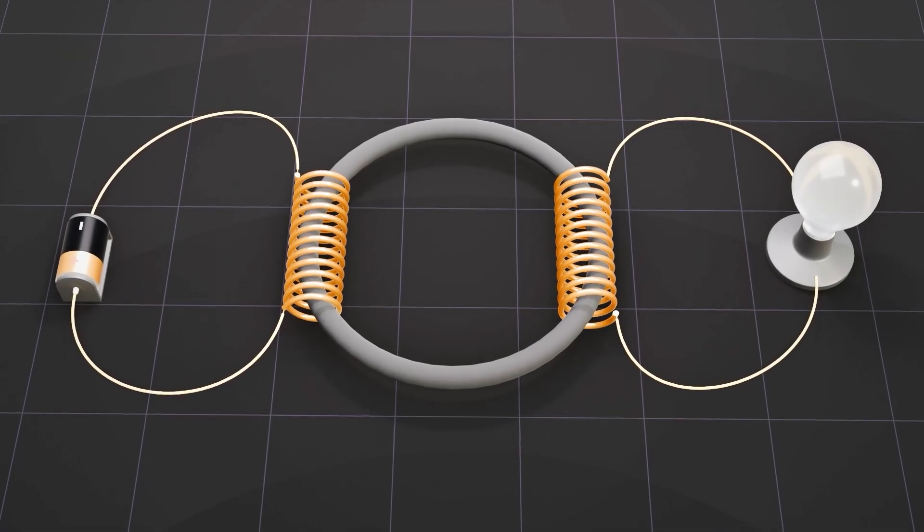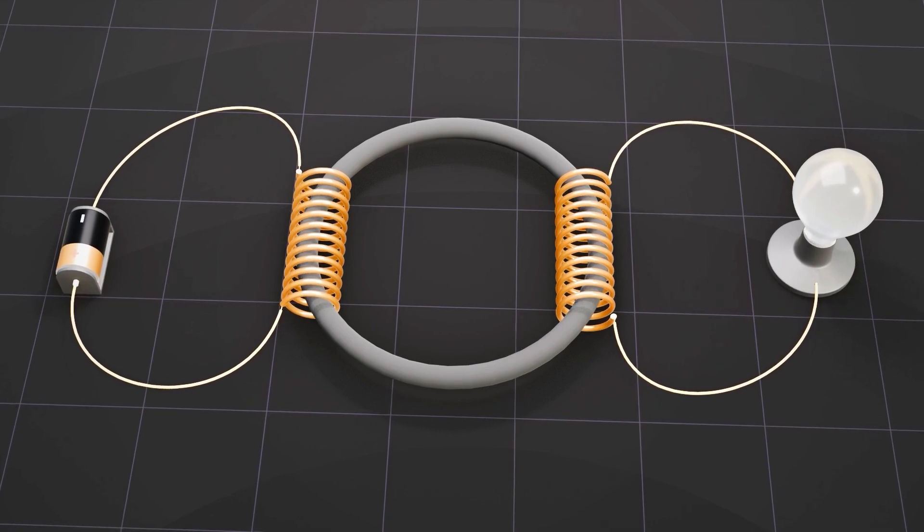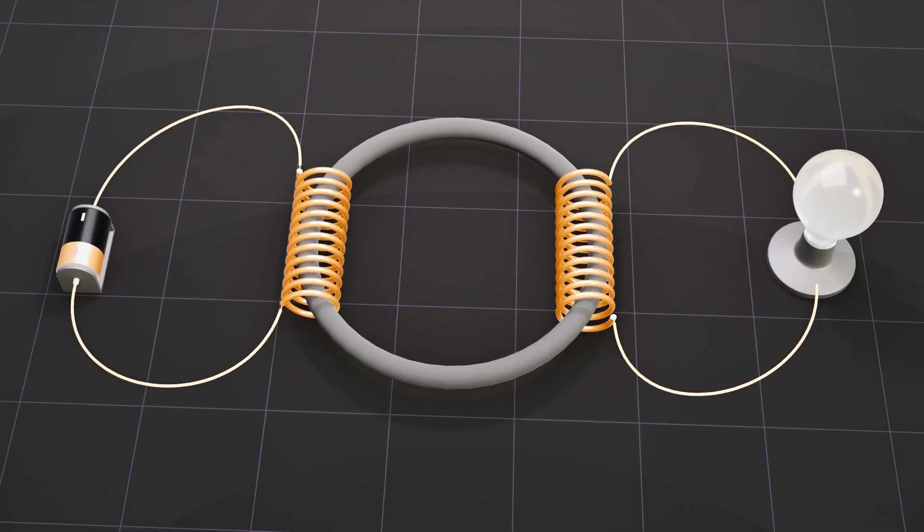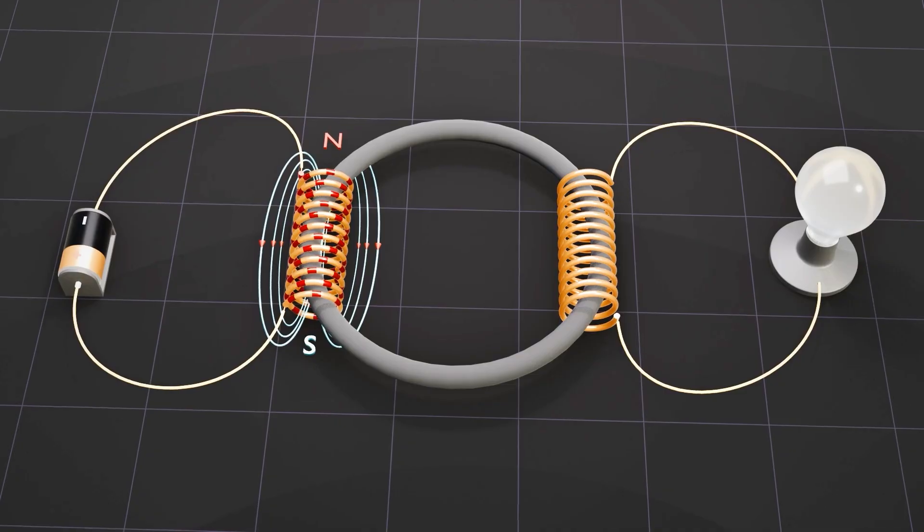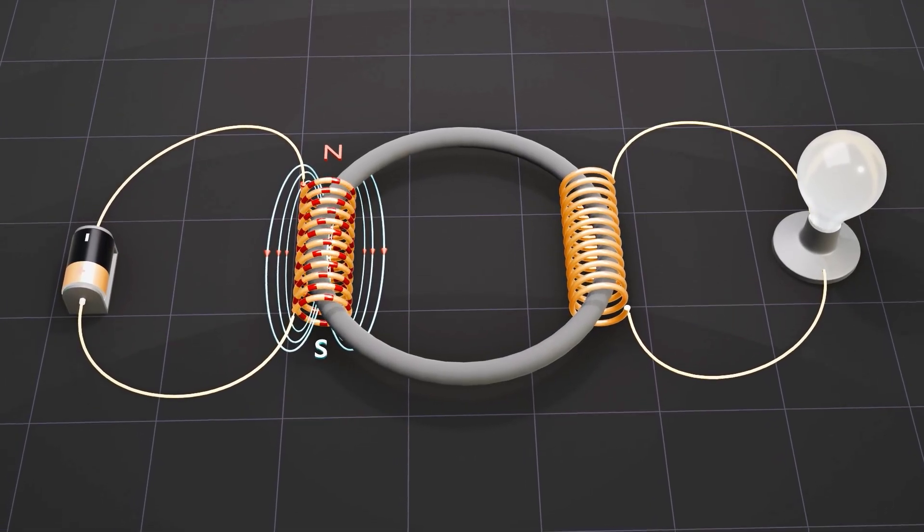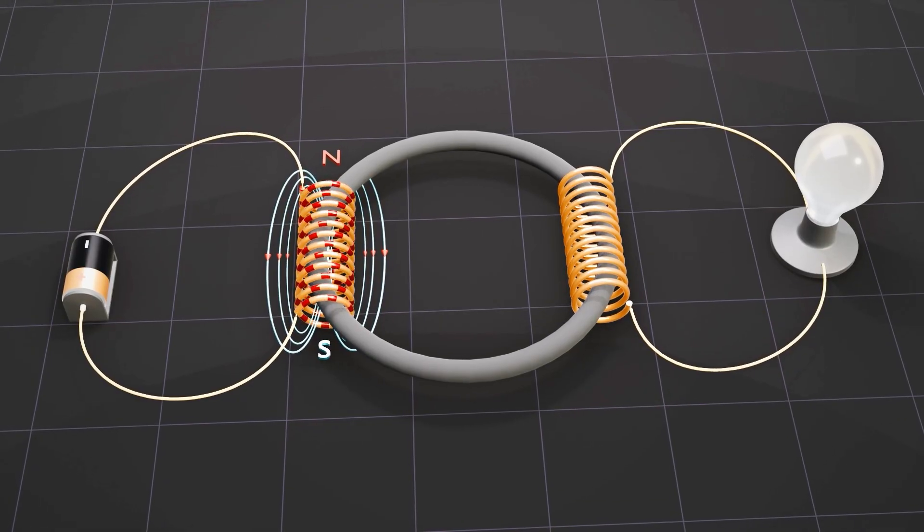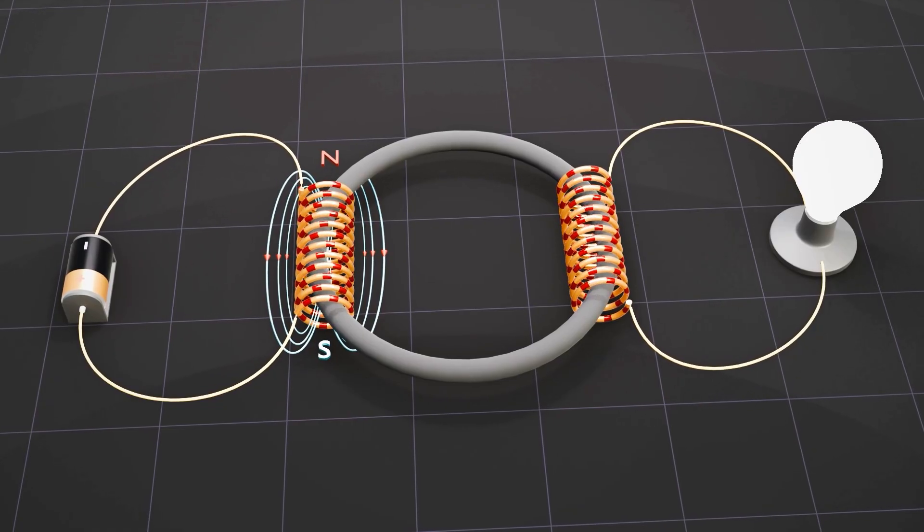Electromagnetic induction can be demonstrated with a device called Faraday's Iron Ring, which consists of a soft iron ring with two separate coils of wire wound around it. When the current flows through the primary coil, it becomes magnetized just like a solenoid. This creates a sudden increase in the magnetic field's strength, which induces a momentary current in the secondary coil.